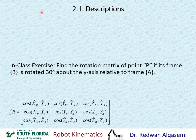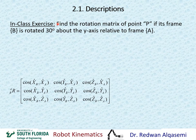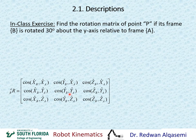Let's take another in-class exercise. Find the rotation matrix of point P if its frame B is rotated 30 degrees about the Y-axis relative to frame A. The direction cosines matrix is provided for reference. Draw this and solve it on your own. Pause the video, complete the exercise, then resume to see the answer.